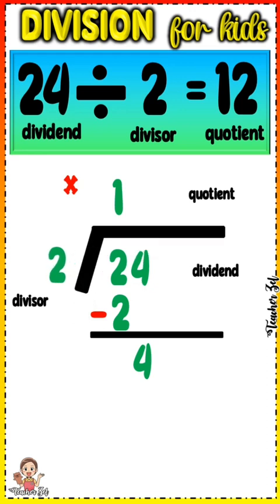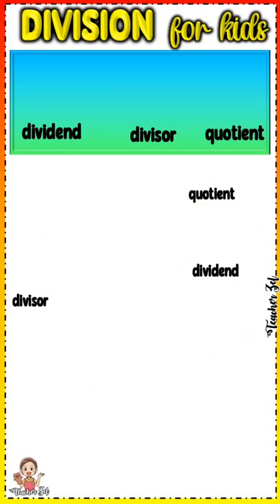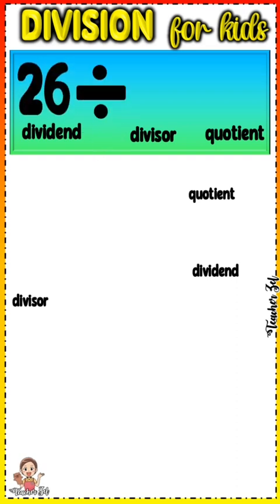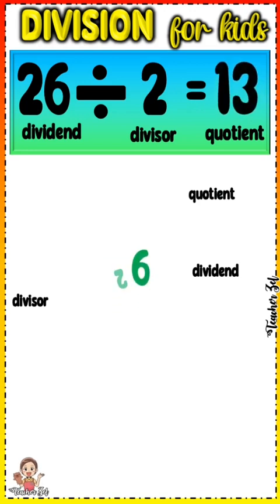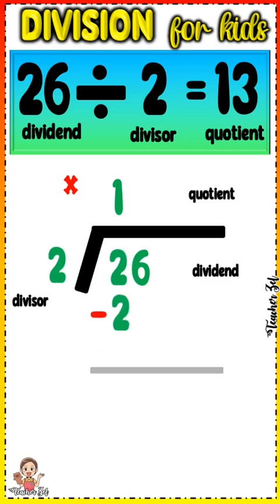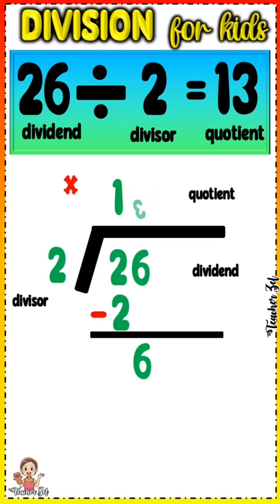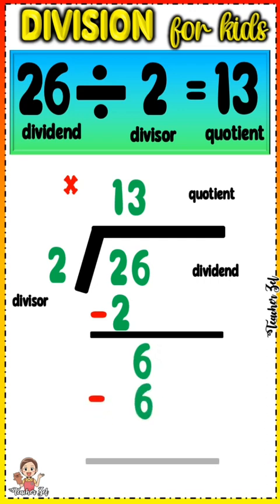4 divided by 2 equals 2. 2 times 2 equals 4. 4 minus 4 equals 0. Bring down 6. 6 divided by 2 equals 3. 3 times 2 equals 6. 6 minus 6 equals 0.